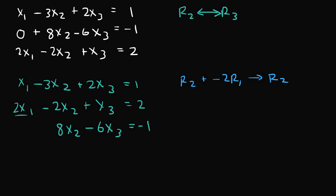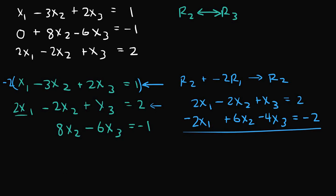So r2, which is this equation right here, is 2x1 minus 2x2 plus x3 is equal to 2. And then if we multiply r1, which is this equation here, by negative 2, we're going to get negative 2x1 plus 6x2 minus 4x3 is equal to negative 2. And if we add these two equations together, we get 0 here,